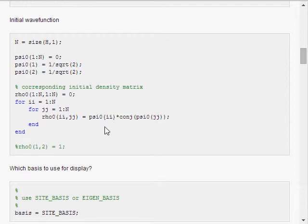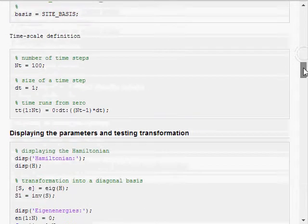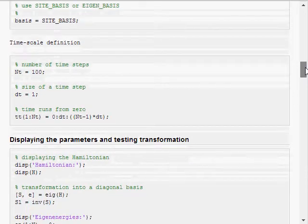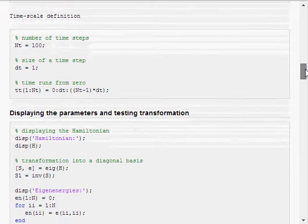We have shown somewhere that the row elements are built out of the expansion coefficients of the wave function. Now I again choose which basis is displayed. And I also define the time.